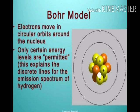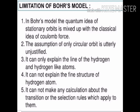From Rutherford's model it is clear that protons lie in the center — the nucleus — and electrons revolve around it. Now, the limitations of Bohr's model: the quantum theory of stationary orbits is mixed up with the classical idea of Coulomb force. The assumption of only circular orbits is unjustified. It can only explain the spectrum of hydrogen and hydrogen-like atoms, cannot explain the fine structure of hydrogen, and cannot make calculations about transition selection rules.